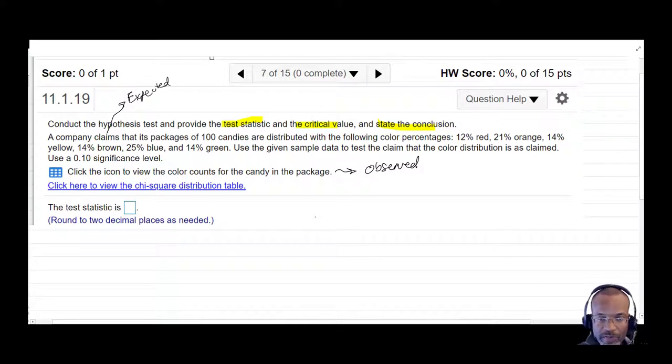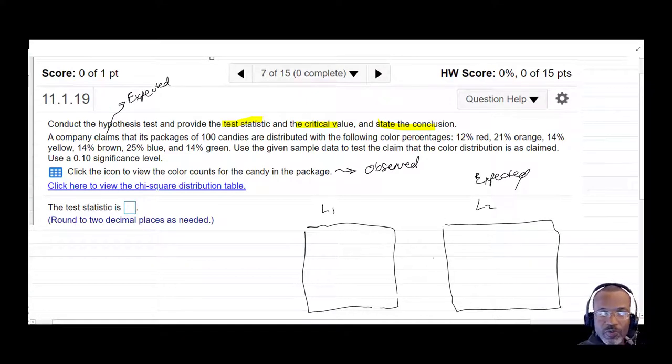So we're going to have two different lists. One list will be just simply what was observed, and then the other list will be simply what was expected. So when we look at out of the 100 candy elements, what's expected given those percentages? Well, since we have 100, we would have 12% of 100 that would be red. We'd have 21% of the 100 that would be orange.